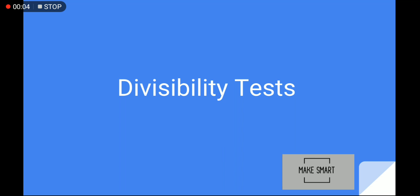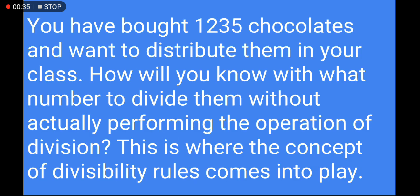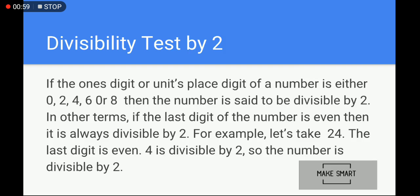Welcome to Make Smart. Today we are going to discuss divisibility tests. I define some rules for divisibility tests — how to tell if a number is divisible by two, three, four, five, six, seven, eight, nine, ten, eleven, twelve, thirteen. For any number, you will divide it. For example, if you have bought 1235 chocolates and want to distribute them in your class, how do you know what number to divide them by without actually performing the operation of division? This is where the concept of the divisibility rule comes into play.